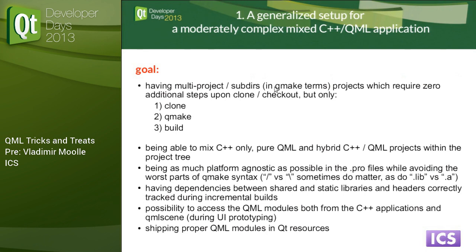Speaking of setting up mixed C++ QML projects, imagine you have a project spanning several sub-projects — some QML applications, some widgets with an embedded Quick window container, and some libraries. You'd like a simple workflow: clone the source tree, run qmake and build. Upon any changes, hit Control+B in Creator and have all libraries properly rebuilt, relinked, copied where they belong, and be able to run all your apps.